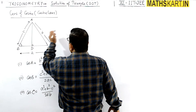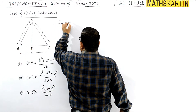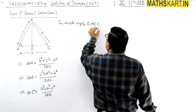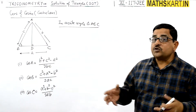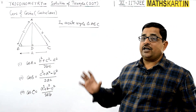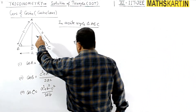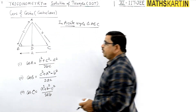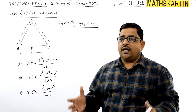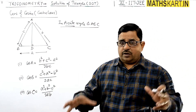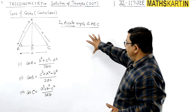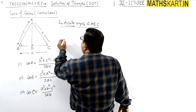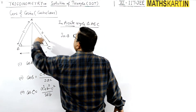We will prove the formula in an acute angle triangle ABC. This formula can also be proved for an obtuse angle triangle, so it works for any triangle. It is better to demonstrate it with an acute angle triangle. We prove it in triangle ABD and triangle ADC.